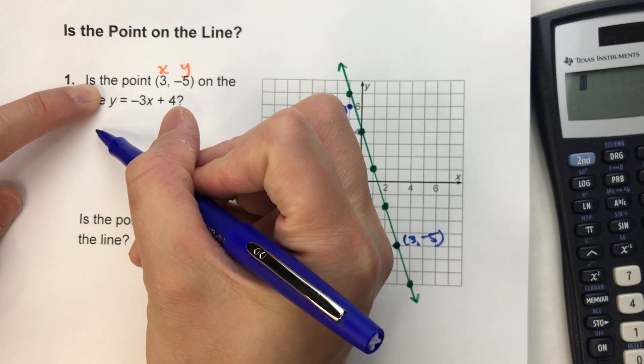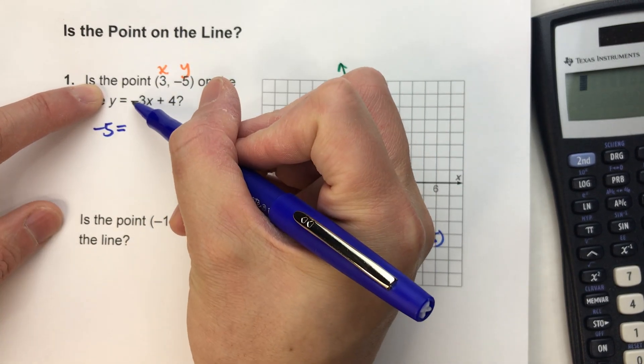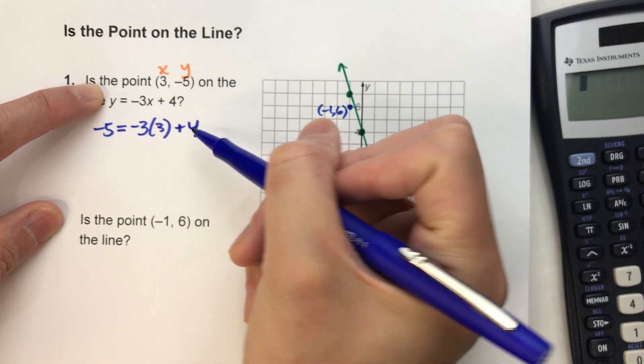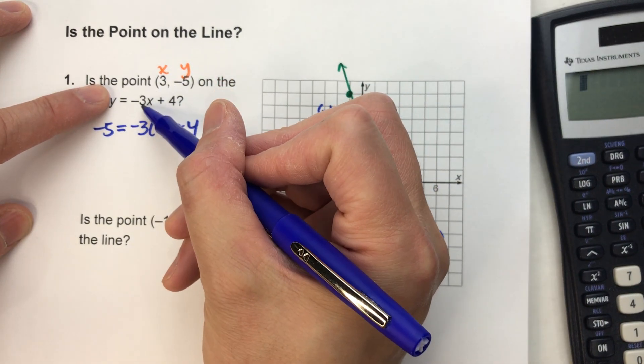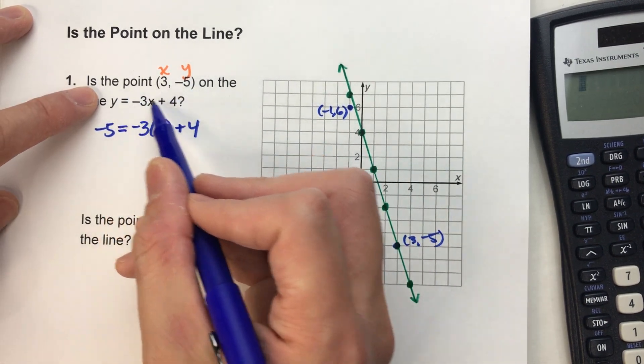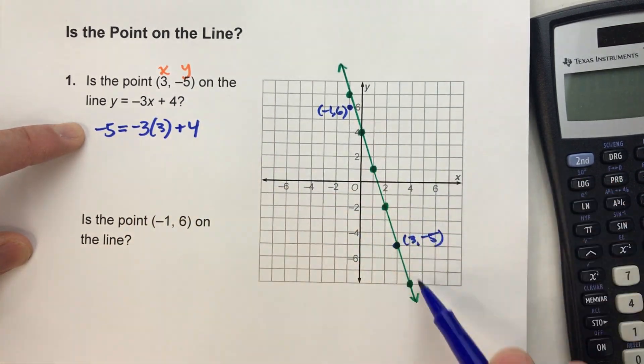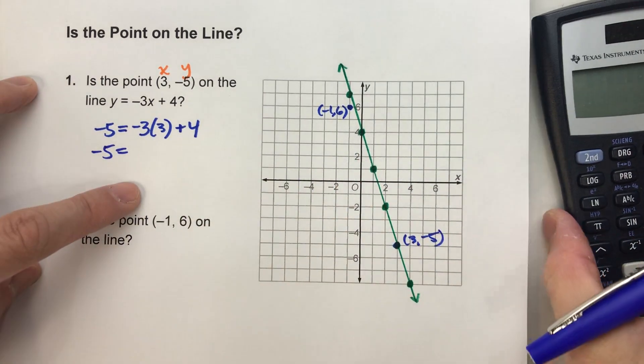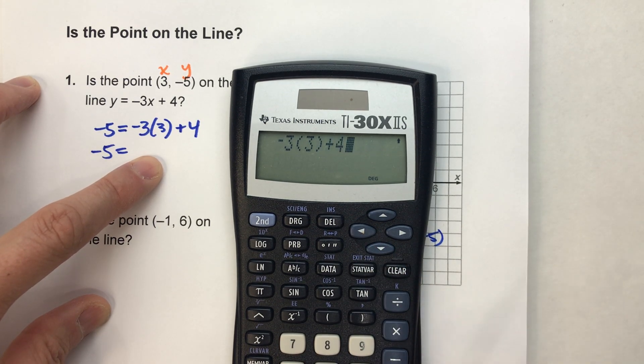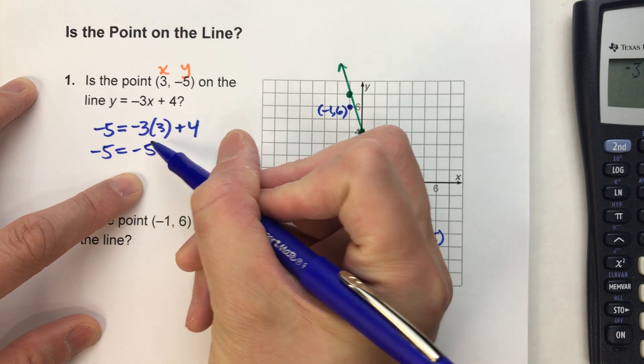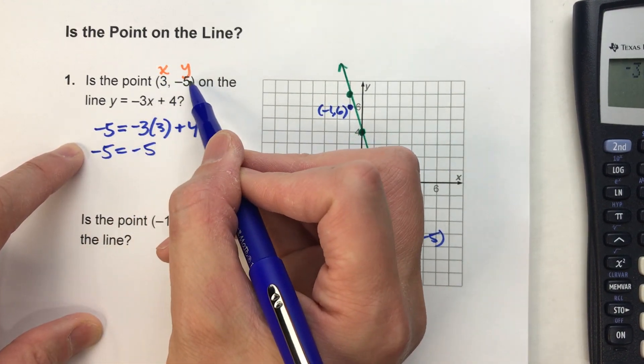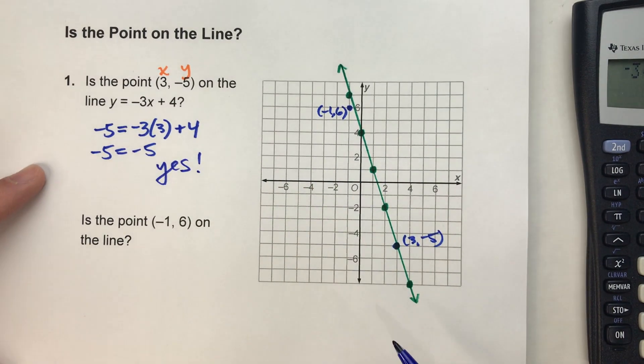Alright, so -5 is y, so I'm going to replace y with -5 equals, instead of -3 times x, I'm going to do -3 times 3 plus 4. So again, all I did was substitute 3 in for x, -5 in for y. And if this side really does equal that side, then we know that coordinate works for the equation, and that coordinate will be on the line. So most of this I can do on my calculator. -3 times 3 plus 4, I get -5, and look what we have. -5 equals -5. So, since this equation actually works when I plug in these points, yes, it is on the line.